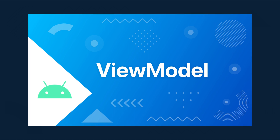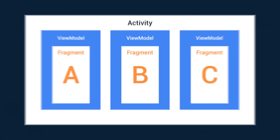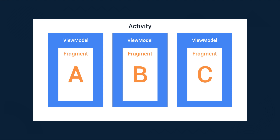So far you might have gotten used to having a single view model instance per fragment. When you regularly instantiate one view model in your fragment it's often scoped to the lifecycle of your fragment. And by scoping that one view model to a single fragment, you cannot share values between multiple fragments.